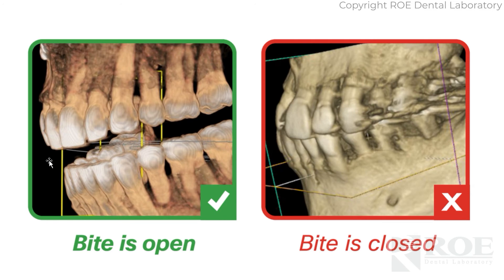The CT scan is very typical of an edentulous scan. You can either capture it with the teeth apart or the teeth together. Normally if it's an edentulous case you would scan with the teeth together, but this is not a dual scan situation. That denture will actually disappear in the CT, so you can take it with the teeth together or the teeth apart — either one with a single dentate.